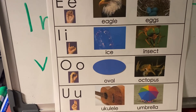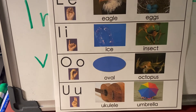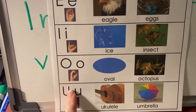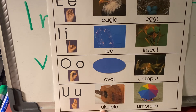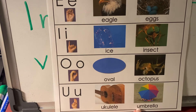The last one is U. U can say its own name, the long sound, which is U, as in ukulele. Or its short sound, U, like umbrella.